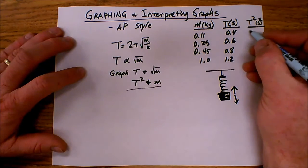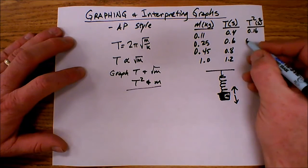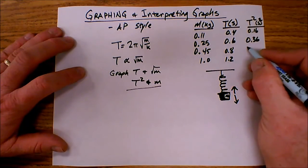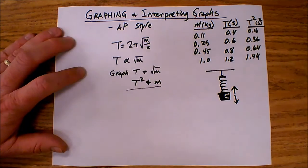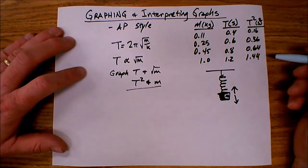S squared, those will be my units. And at this point, I simply square the T values. So 0.4 squared, 0.6 squared, 0.8 squared, and 1.2 squared. So now I've got this data of T squared.